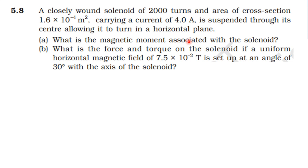First question: What is the magnetic moment associated with the solenoid? Second question: What is the force and torque on the solenoid if a uniform horizontal magnetic field of 7.5 into 10 power minus 2 tesla is set up at an angle of 30 degrees with the axis of the solenoid?